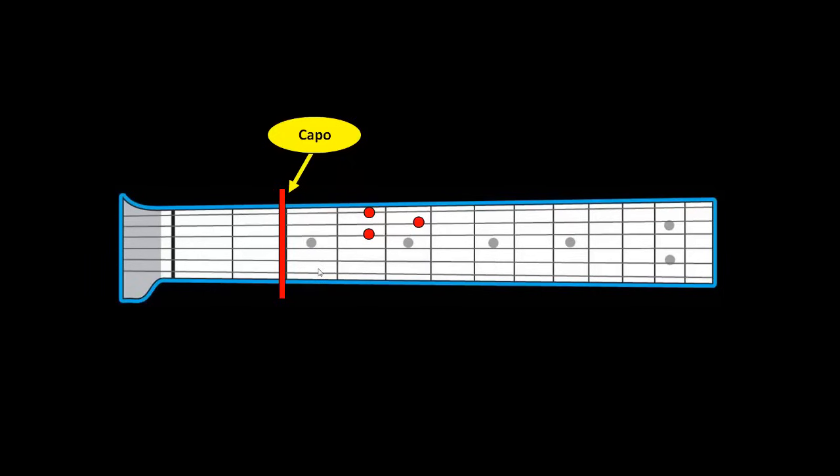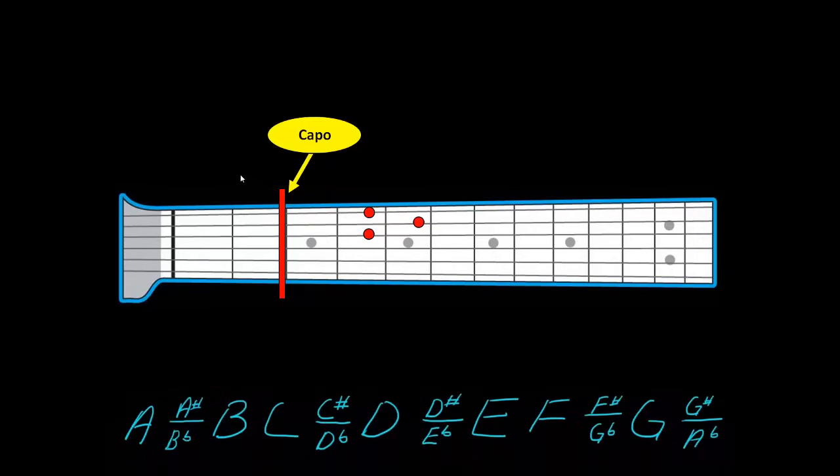It will sound exactly like the D chord except it is not a D chord. It is a different name chord. And in order to find out what the name of this new chord is you're going to need to understand a little theory.